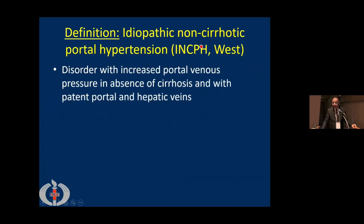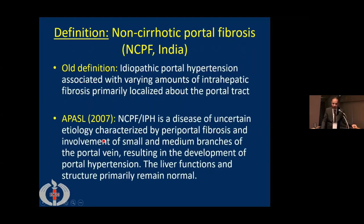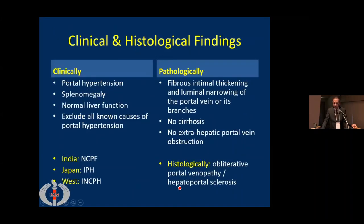The western definition is simpler: a disorder with increased portal venous pressure in absence of cirrhosis with patent portal and hepatic vein. APACEL also gave its definition labeling it as NCPF and IPH, published in 2007 — a disease of uncertain etiology characterized by periportal fibrosis and involvement of small and medium branches of portal vein, resulting in portal hypertension, while liver functions and structure remain primarily normal in most patients.